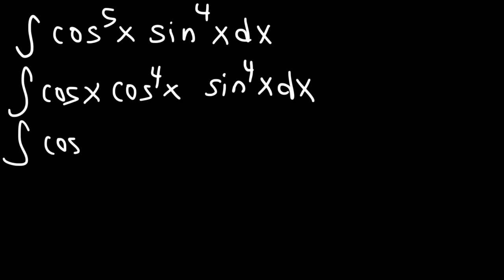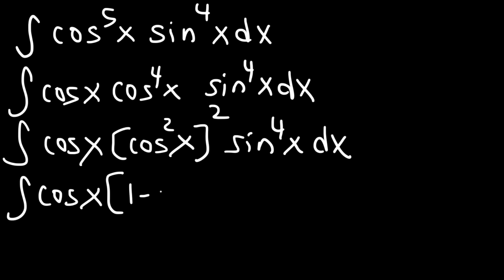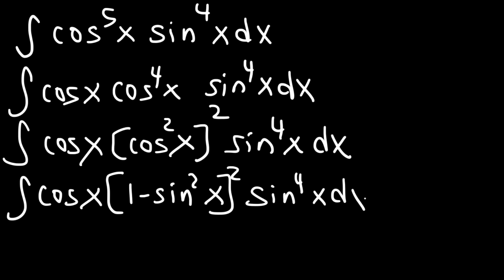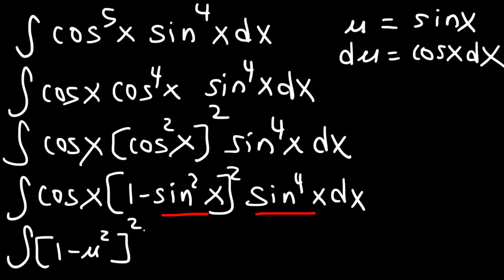First, we're going to replace cosine to the fourth with cosine squared raised to the second power, because two times two is four. And now, just like before, we can replace cosine squared with 1 minus sine squared. Now we're ready to use u substitution. We're going to make u equal to sine x, and du is going to be cosine x dx. So everywhere we see a sine function, let's replace it with the u variable. This gives us 1 minus u squared raised to the second power times u to the fourth, and then cosine x dx, which we replace with du.